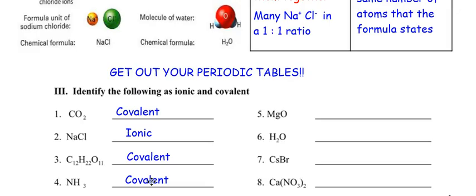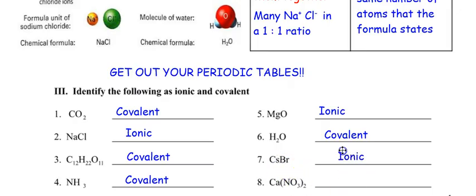Welcome back. Magnesium oxide is ionic — you have a metal and a non-metal. H2O is covalent — it's a molecule. Cesium bromide: cesium is on the far left of the periodic table and is definitely a metal; bromide is a non-metal — that makes it ionic. For number eight, calcium with that group in parentheses: calcium is a metal and that group is a polyatomic ion made up of non-metals. A metal plus a polyatomic ion means ionic — we'll talk more about polyatomic ions in chapter seven.